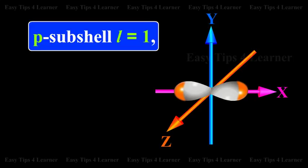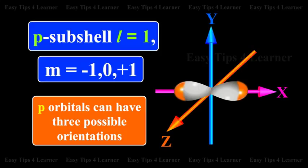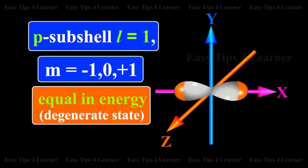For the P subshell, L is equal to 1. There are three values of M, namely minus 1, 0, and plus 1.